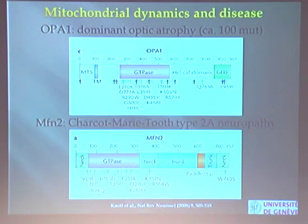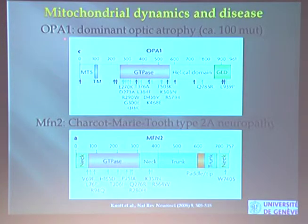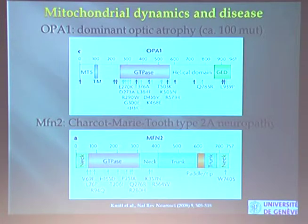Our interest then moved to mitochondrial dynamics and disease. There are many mutations known in fusion proteins in families that lead to disease. Mutation in OPA1 leads to dominant optic atrophy, with more than 100 mutations known. Mutation in mitofusin 2 leads to the neuropathy Charcot-Marie-Tooth type 2.